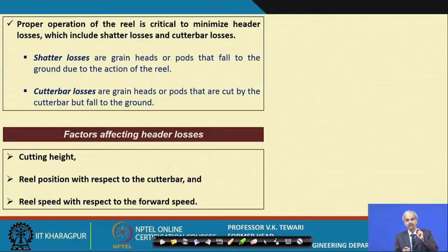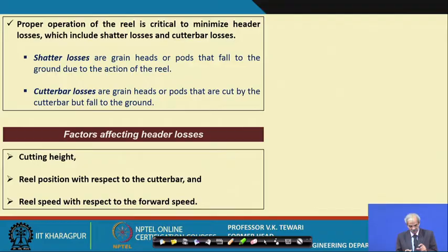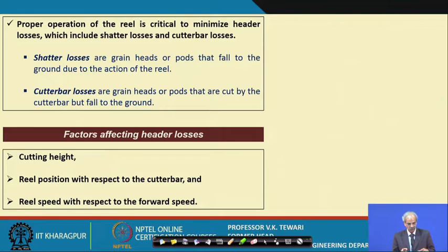Factors affecting header loss include: cutting height, reel position with respect to the cutter bar, and reel speed with respect to the forward speed of travel. If the reel is not properly aligned with the cutter bar, plants will be deflected differently and losses increase. We will also show through a problem the importance of reel speed relative to forward speed, as improper synchronization increases losses.